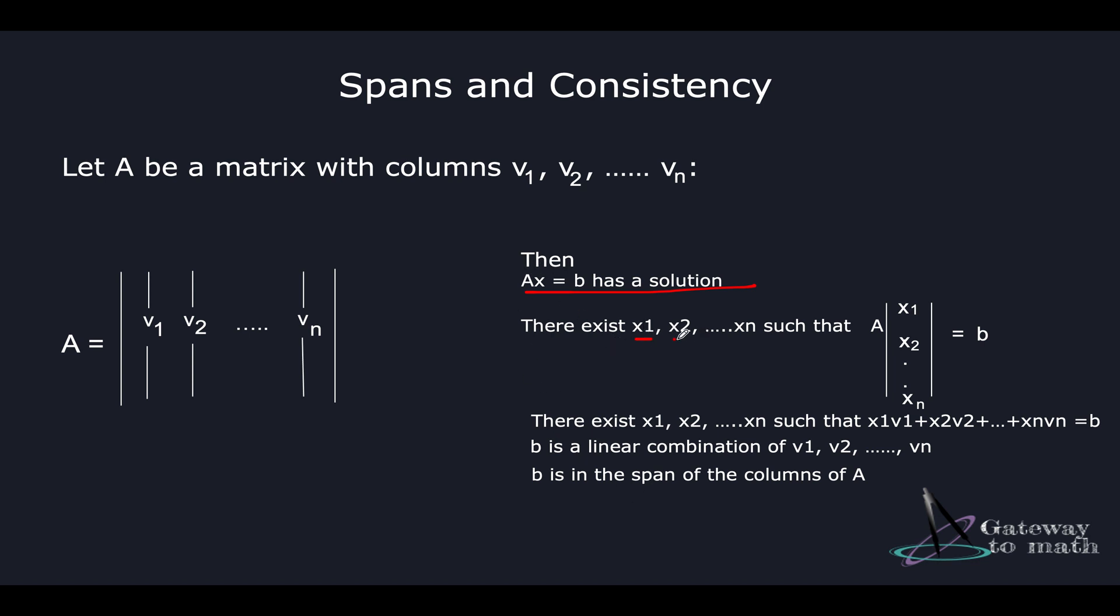The first condition: there exist x1, x2, ..., xn such that when you represent them in matrix form, A times x equals b. The second condition is that there exist x1, x2, ..., xn such that x1v1 + x2v2 + ... + xnvn equals b.